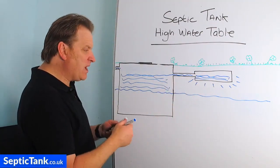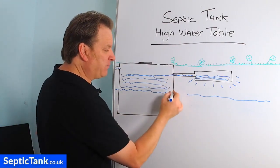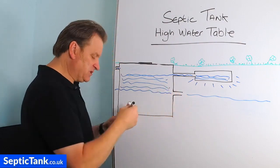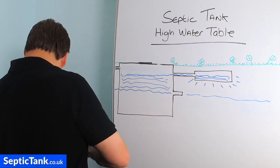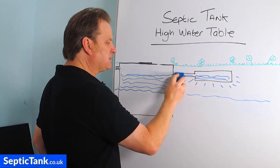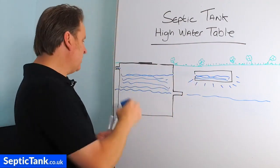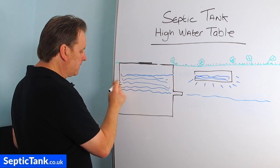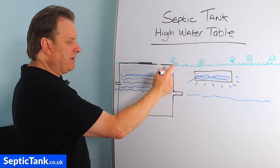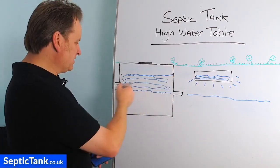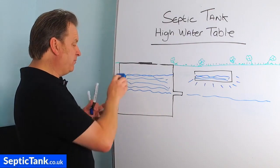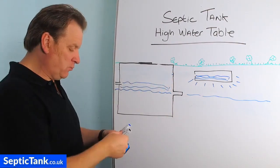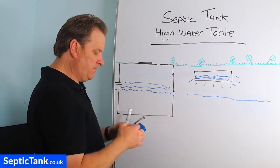What if you can't raise the level of the outlet pipe? Let's say the original soak away was in a position where raising wasn't possible. For example, if the inlet pipe is already quite high coming into the tank, you can't have the outlet pipe higher than the inlet pipe — the water would back up towards your house. Everything works via gravity, so that approach won't work in that case.